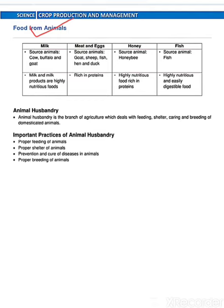Food from animals. Milk giving animals are cow, buffalo and goat. Meat and egg giving animals like goat, sheep, fish, hen and duck. Then after honey from honey bees. Now animal husbandry — it is the branch of agriculture which deals with the feeding, shelter, caring and breeding of domesticated animals. Importance of practices of animal husbandry: proper feeding of animals, proper shelter of animals, prevention and cure of disease in animals, and proper breeding of animals.